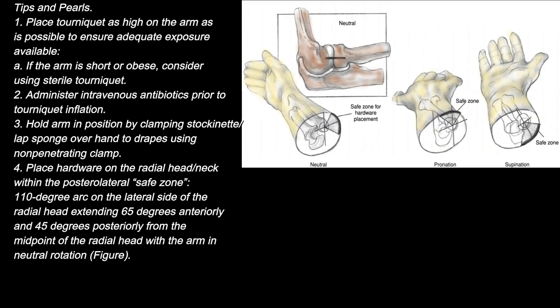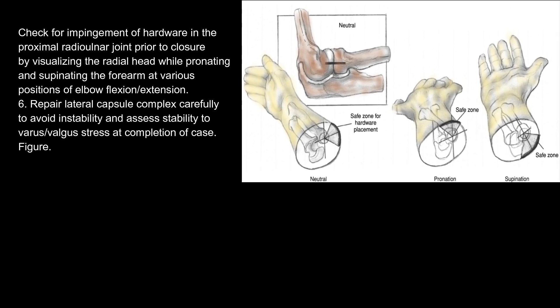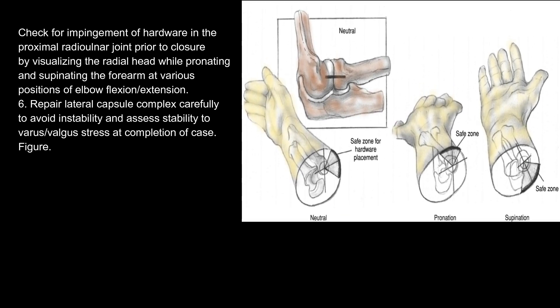Tips and pearls: 1. Place tourniquet as high on the arm as possible to ensure adequate exposure. If the arm is short or the patient is obese, consider using a sterile tourniquet. 2. Administer intravenous antibiotics prior to tourniquet inflation. 3. Hold the arm in position by clamping a stockinette/lap sponge to the drapes using a non-penetrating clamp. 4. Place hardware on the radial head/neck within the posterolateral safe zone — a 110-degree arc on the lateral side of the radial head extending 65 degrees anteriorly and 45 degrees posteriorly from the midpoint of the radial head with the arm in neutral rotation. Check for impingement of hardware in the proximal radial ulnar joint prior to closure by visualizing the radial head while pronating and supinating the forearm at various positions of elbow flexion/extension. 6. Repair the lateral capsule complex carefully to avoid instability and assess stability to varus/valgus stress at completion of the case.